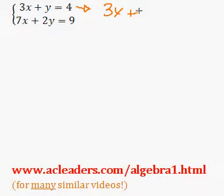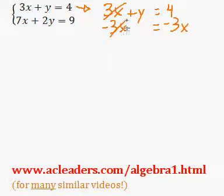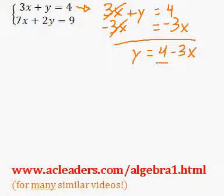3x plus y is equal to 4. Now I can actually, let me just fix that equal sign here, I can actually just subtract 3x from both sides of the equation. So y is equivalent to 4 minus 3x, and once I have this I can of course just substitute this expression for what we had for y.